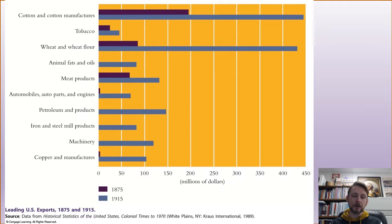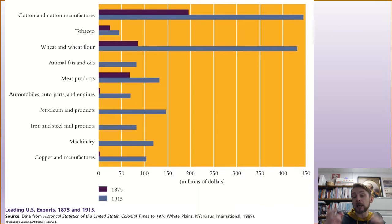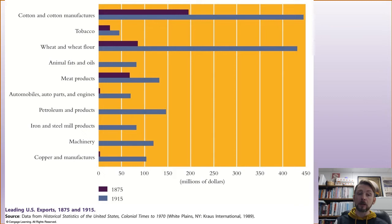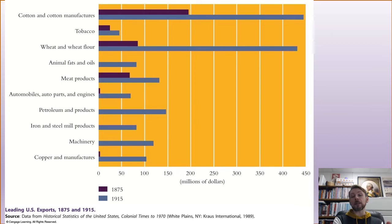Leading exports in 1875 included tobacco, cotton, wheat, and meat products. Over time there's a greater emphasis on industrial products — automobile parts, engines, iron and steel, machinery, and other metal products by 1915. The US shifts away from agricultural-based exports more towards industrial exports.